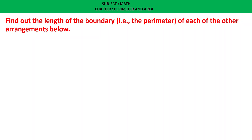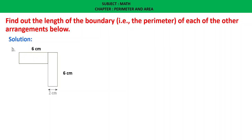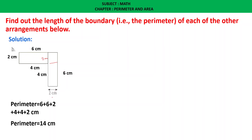Find the perimeter of each of the other arrangements. For the first arrangement: the sides measure 6, 6, 2, 4, 4, and 2 centimeters. So perimeter equals 6 plus 6 plus 2 plus 4 plus 4 plus 2 equals 24 centimeters. For the second arrangement: sides are 6, 2, 2, 6, 2, 6, and 2 centimeters, giving perimeter equals 28 centimeters.